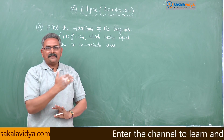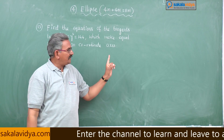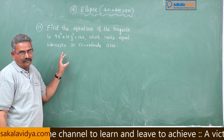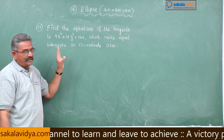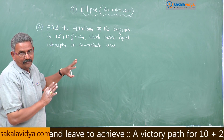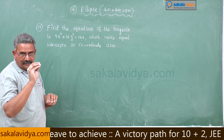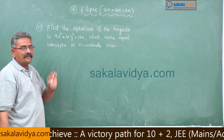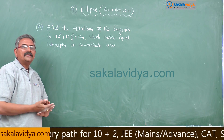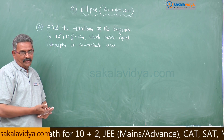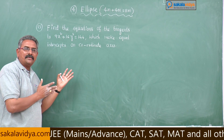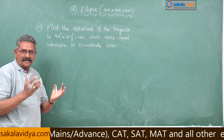First, check the problem. The given equation of the ellipse is not in the standard form. Let us put the given equation of the ellipse in the standard form by dividing throughout by 144.